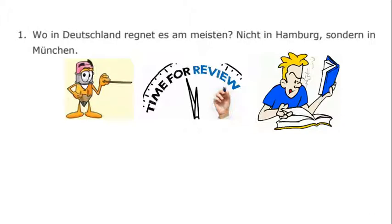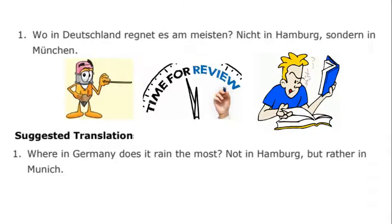So the first sentence is: Wo in Deutschland regnet es am meisten? Nicht in Hamburg, sondern in München. Go ahead and pause the tape; we'll meet back in a moment. The suggested translation is: Where in Germany does it rain the most? Not in Hamburg, but rather in Munich.